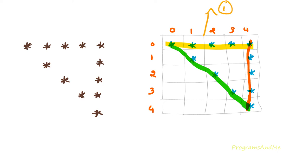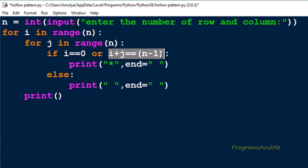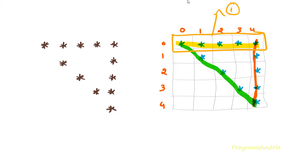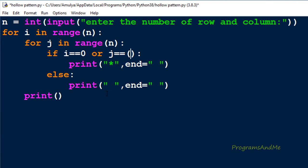For the first part, we want to print a star at row 0, the first row, so the condition is i == 0. For the second part, we want a star at the last column. When n=5 the last column is 4, when n=6 it's 5, when n=7 it's 6 — so the last column is n-1. Since columns begin from 0, the condition is j == n - 1.